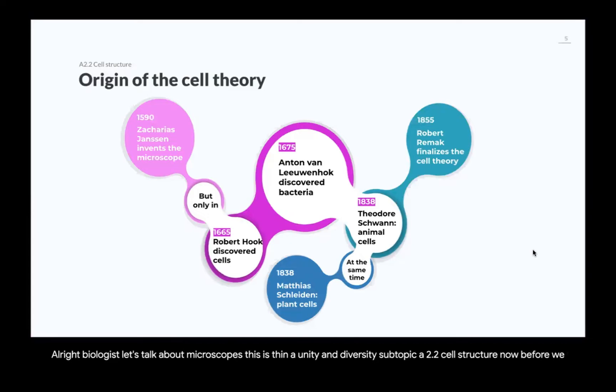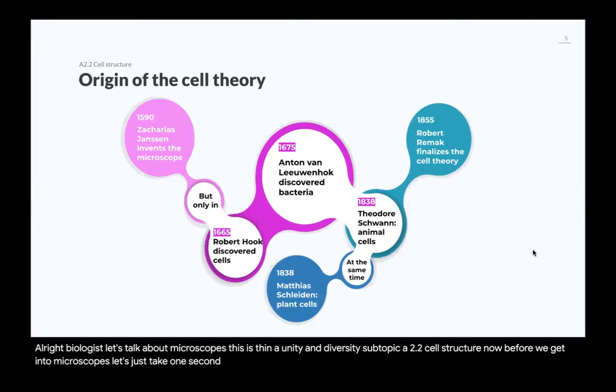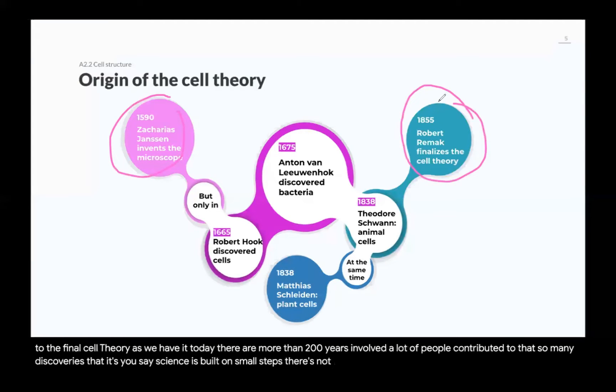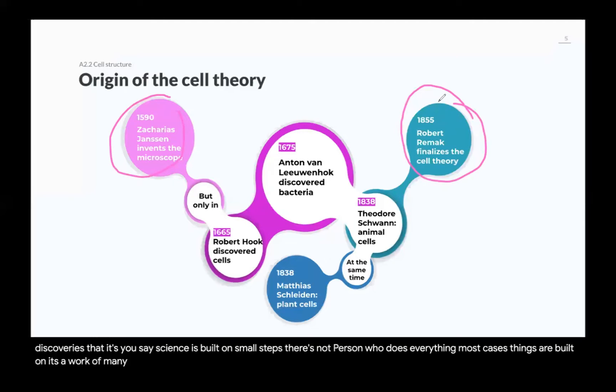Before we get into microscopes, let's just take one second and see that from the invention of the microscope to the final cell theory as we have it today, there were more than 200 years involved. A lot of people contributed to that, so many discoveries. That is to say, science is built on small steps. There's not one single person who does everything. Most cases, things are built on, it's a work of many hands by many people in many parts of the world, spending many, many years.